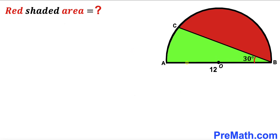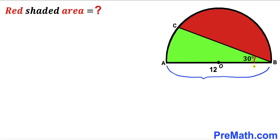Welcome to Pre-Math. In this video we have a semicircle with center O, divided into two parts: a green region and a red shaded region. The diameter AB is 12 units and the angle ABC is 30 degrees. Our task is to calculate the area of this red shaded region.